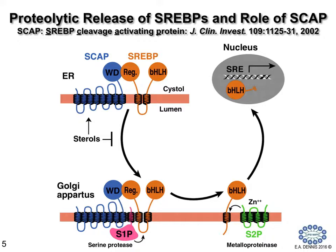But once transported to the Golgi, a serine protease known as S1P acted upon SREBP to cleave its regulatory portion, liberating what is termed BHLH. The BHLH piece was still associated with the Golgi apparatus, but a second protein, a metalloprotease known as S2P, which is zinc activated, carried out a second cleavage on the remaining protein to liberate BHLH, which then transported itself to the nucleus, where it bound to the sterile regulatory element.